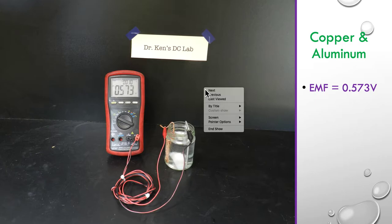Our next one is copper and aluminium. Again copper hasn't changed. This one's changed so you can see this is aluminium. And our reading in this case 0.573 again a reasonable potential difference between the two electrodes.